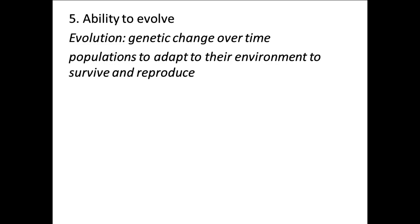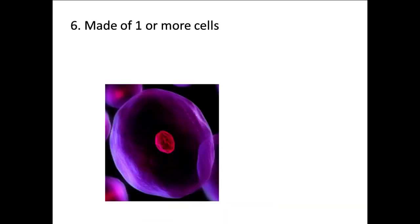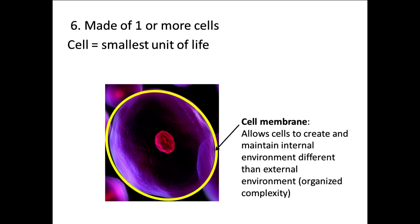Characteristic five is the ability to evolve — we will spend a whole week talking about evolution later this quarter. Evolution, simply put, is genetic change over time, and this causes populations to adapt to their environment to survive and reproduce. We have gotten all of the diversity of life we see on earth today through the process of evolution, and evolution is still continuing in humans and every other organism around us. Characteristic six — our final one — is that all living organisms are made of at least one cell. The cell is the smallest unit of life.